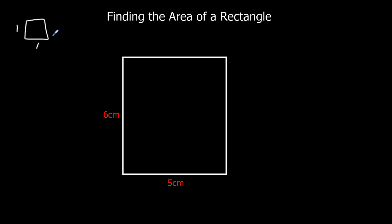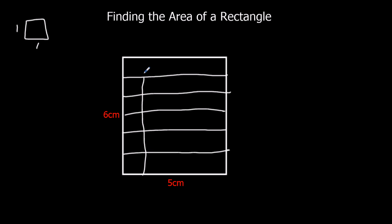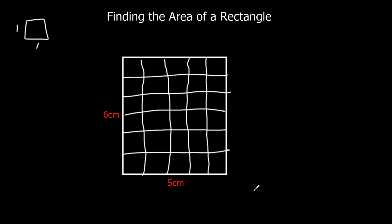What's the area — how many squares fit into this shape? That's what they're asking us. We've got six going down here and five along here. If you can imagine the shape being in squares, you'll have one, two, three, four, five, six centimetres on this side, and one, two, three, four, five centimetres along the bottom.